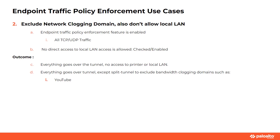The second use case for the endpoint traffic policy enforcement feature is to exclude network bandwidth-clogging domains, but also not allow local LAN network traffic. This is achieved by enabling the endpoint traffic policy enforcement feature and selecting the 'all TCP/UDP traffic' option. Also, 'no direct access to local LAN' is enabled. Everything goes over the tunnel to exclude bandwidth-clogging domains such as YouTube, which we have used in our demo.